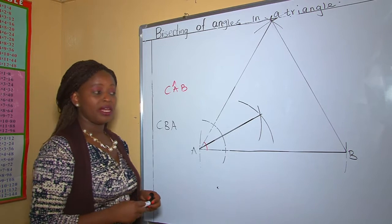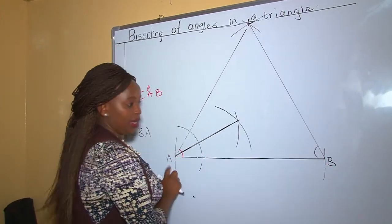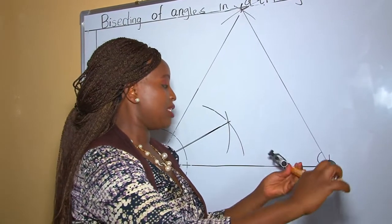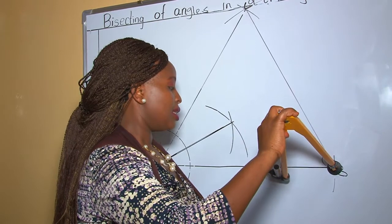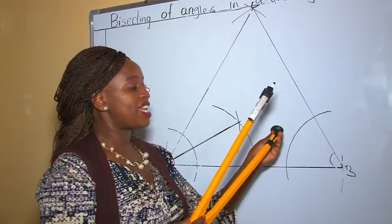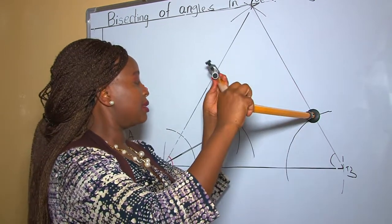Let us now bisect angle CBA. It is made by line CB and line BA. You put your compass at the vertex there, then make some small arcs that cut the two lines that make that angle. Choose the radius of your choice at one side of the line and make arcs.